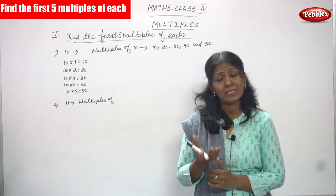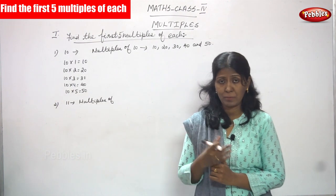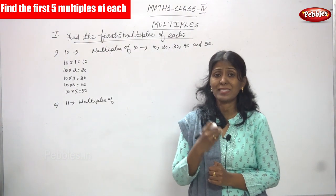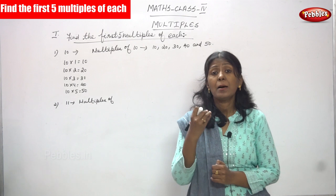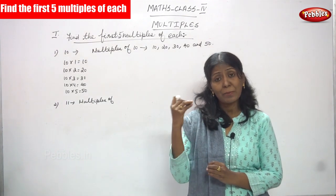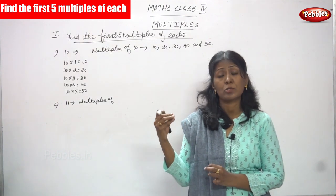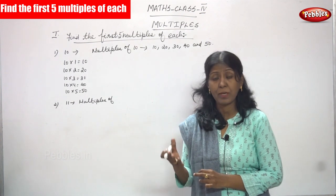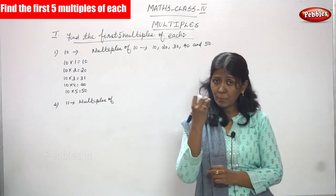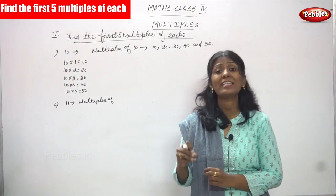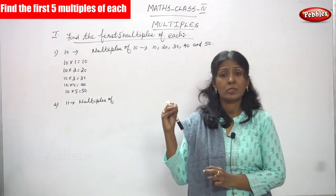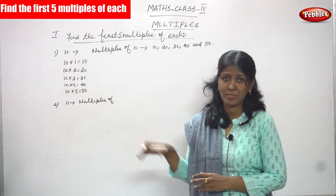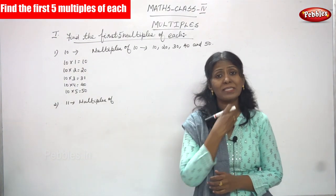Multiples — what are multiples? Multiples are the numbers obtained by multiplying a given number by 1, 2, 3, 4, and so on. This is the definition of multiples.